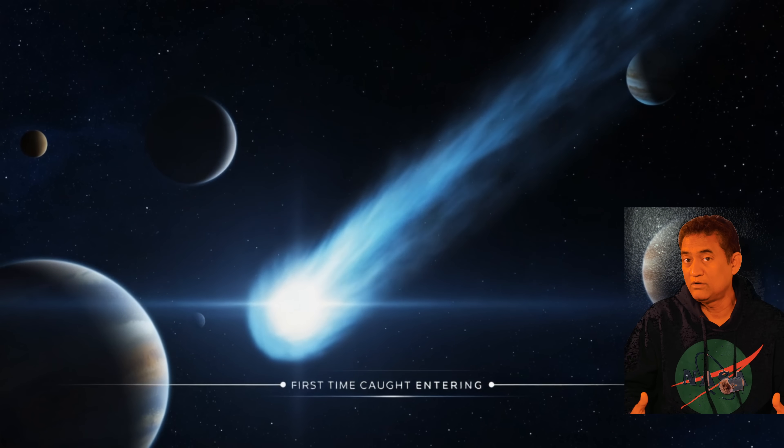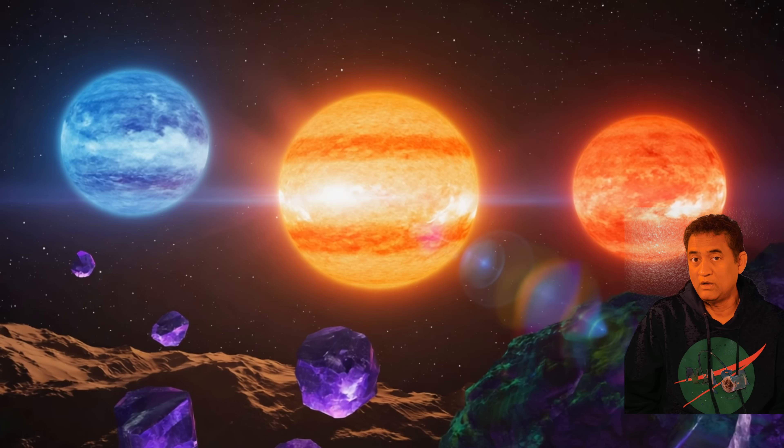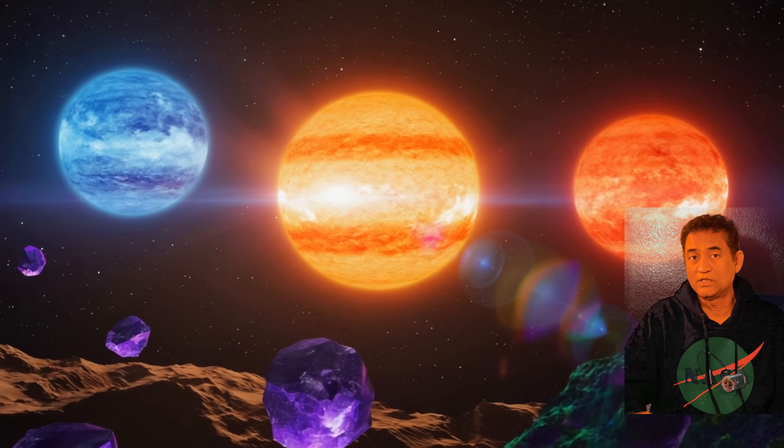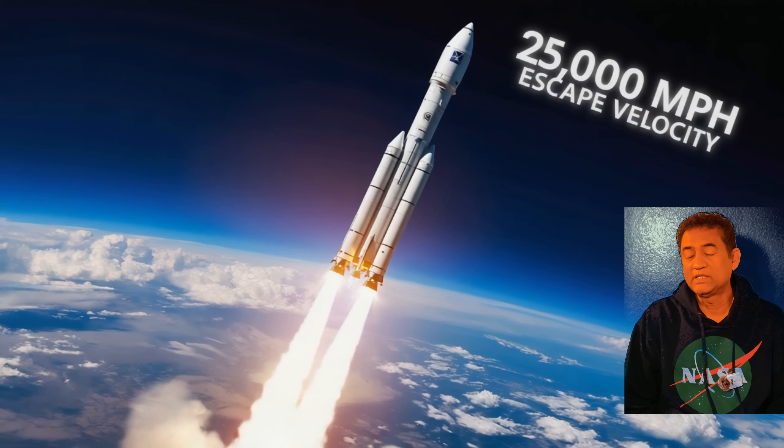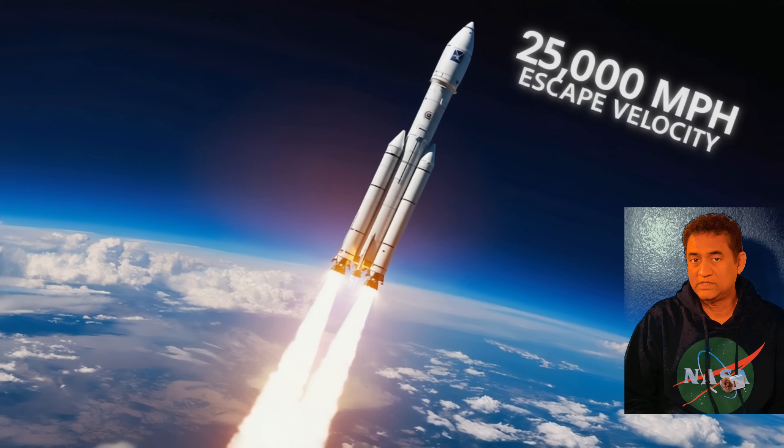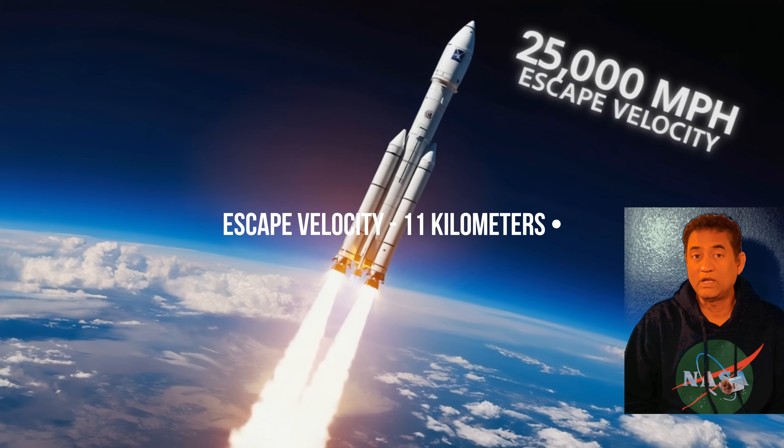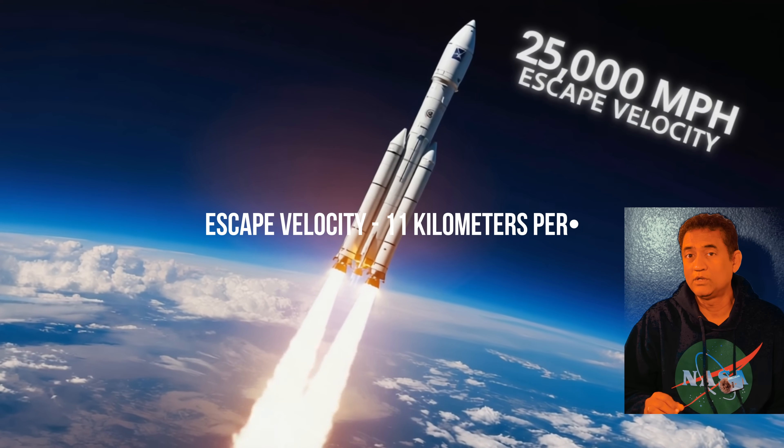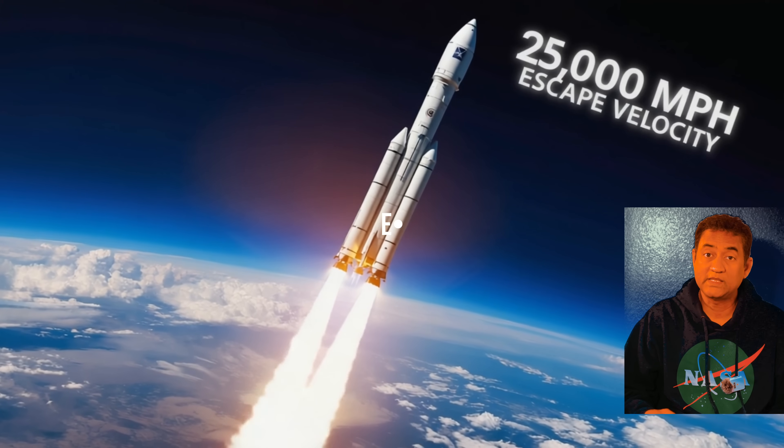That means now we have a front row seat to watch this comet which came from another solar system. Let me give you a sense of scale. To leave Earth's gravity, you need to travel about 11 kilometers per second. That is called escape velocity.